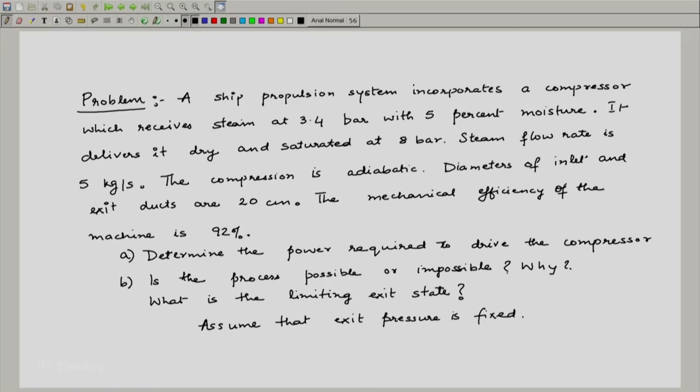Let us consider this problem here. A ship propulsion system incorporates a compressor which receives steam at 3.4 bar with 5% moisture. It delivers it dry and saturated at 8 bar. Steam flow rate is 5 kilograms per second. The compression is adiabatic. Diameters of inlet and exit ducts are 20 centimeters. The mechanical efficiency of the machine is 92 percent. What do we have to find out? Determine the power required to drive the compressor, and is the process possible or impossible? Why? What is the limiting exit state? We have to assume that the exit pressure is fixed.